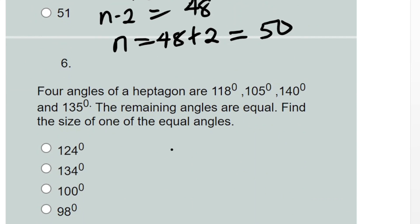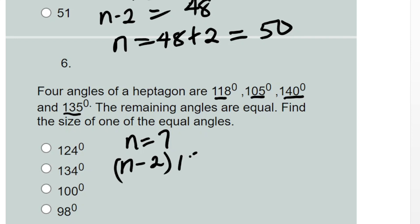Question six: four of the angles of a heptagon are given, and the remaining angles are equal. First, a heptagon has seven sides, so n equals seven. Out of the seven angles, four are given and the remaining three are equal. The first step is to calculate the total sum of angles in the heptagon using (n minus 2) times 180.